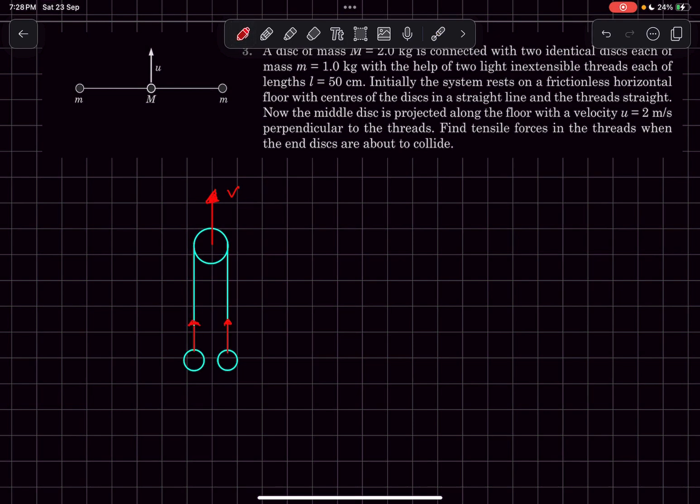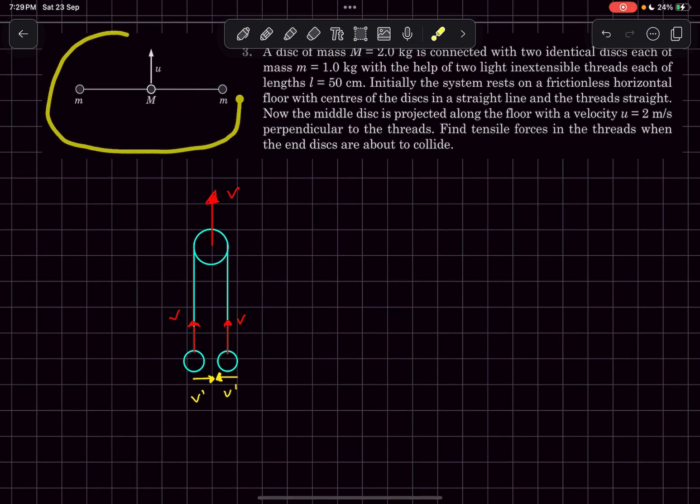So both these disks will have the same velocity v. These balls will also have some approach velocity, let's call it v dash. As there are clearly no external forces on the system in this particular problem, we can say the momentum in the x direction and in the y direction should be conserved.